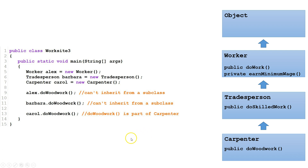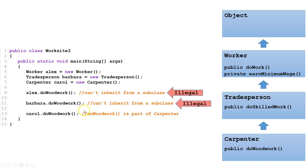Let's look at a third and final class, Worksite. We have Worker Alex, Tradesperson Barbara, and Carpenter Carol. It is illegal for Alex to call DoWoodWork, because a superclass cannot inherit from a subclass — only a subclass can inherit from a superclass, so the Worker class does not inherit from its subclass Carpenter. Similarly, Barbara, which is a Tradesperson, does not inherit from its subclass Carpenter. However, calling DoWoodWork from Carroll is legal — the Carroll variable points to an instance of the Carpenter class, and the Carpenter class contains the method DoWoodWork.